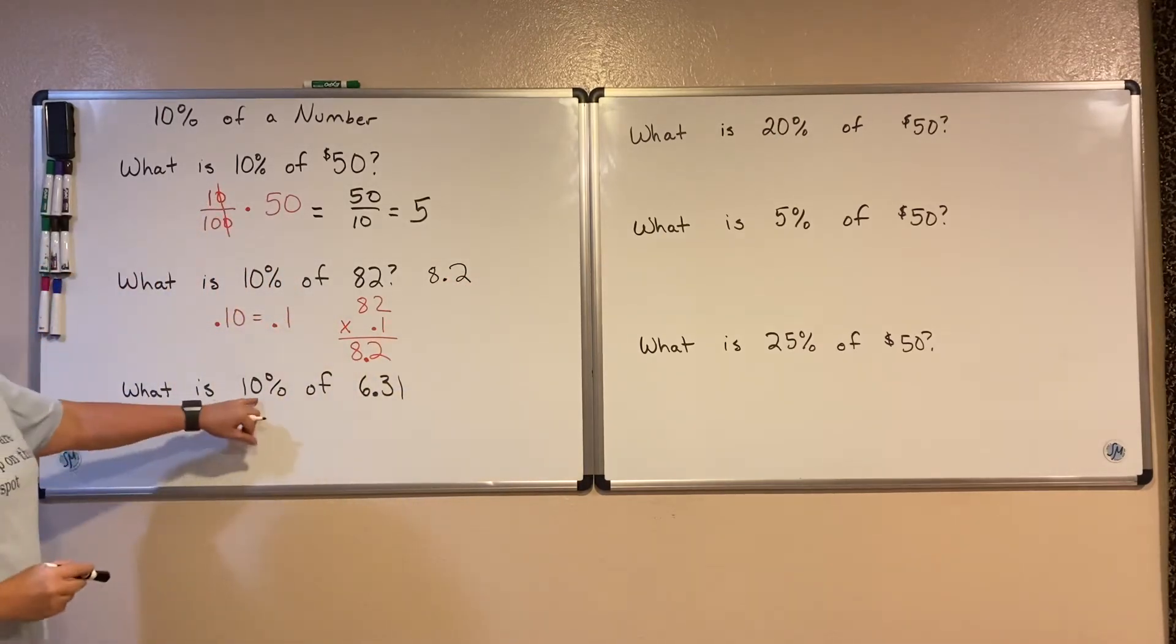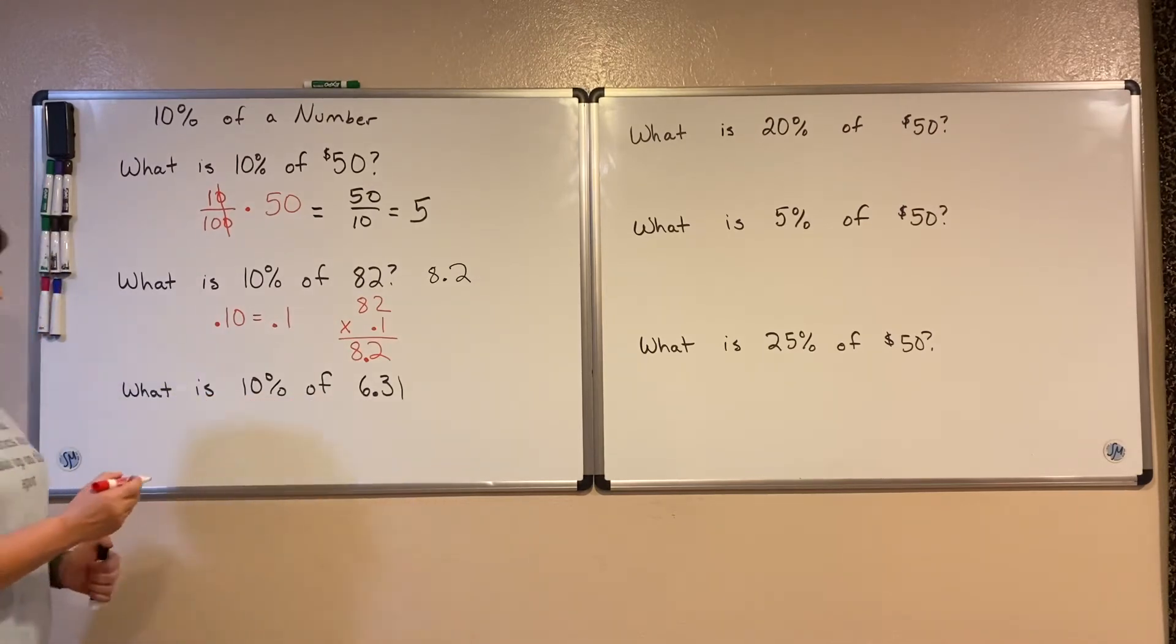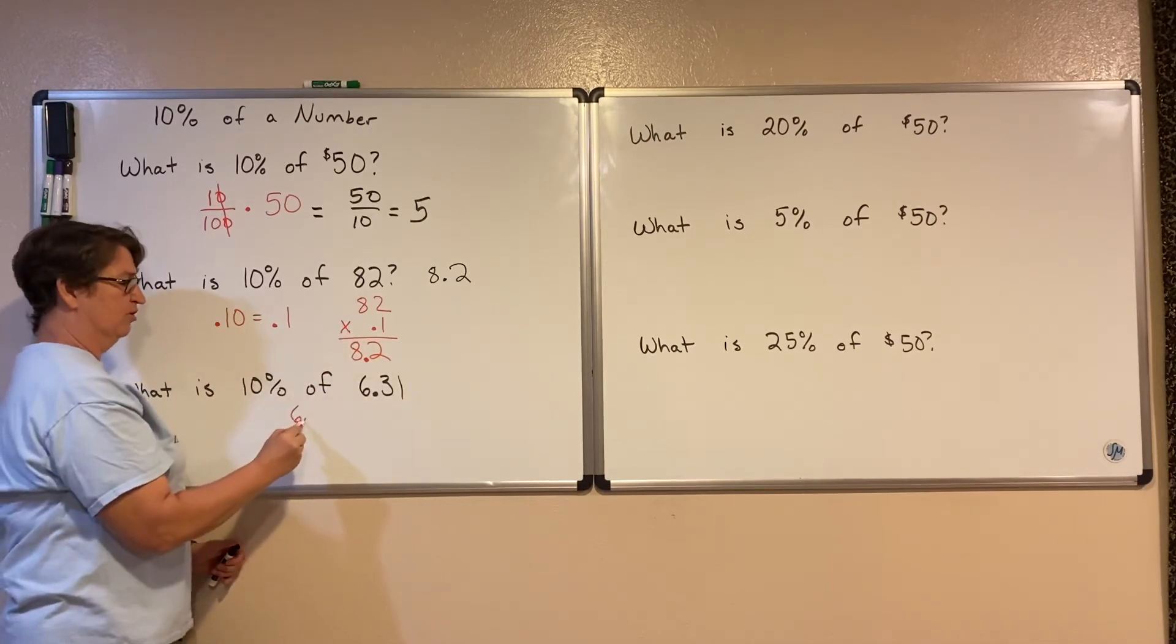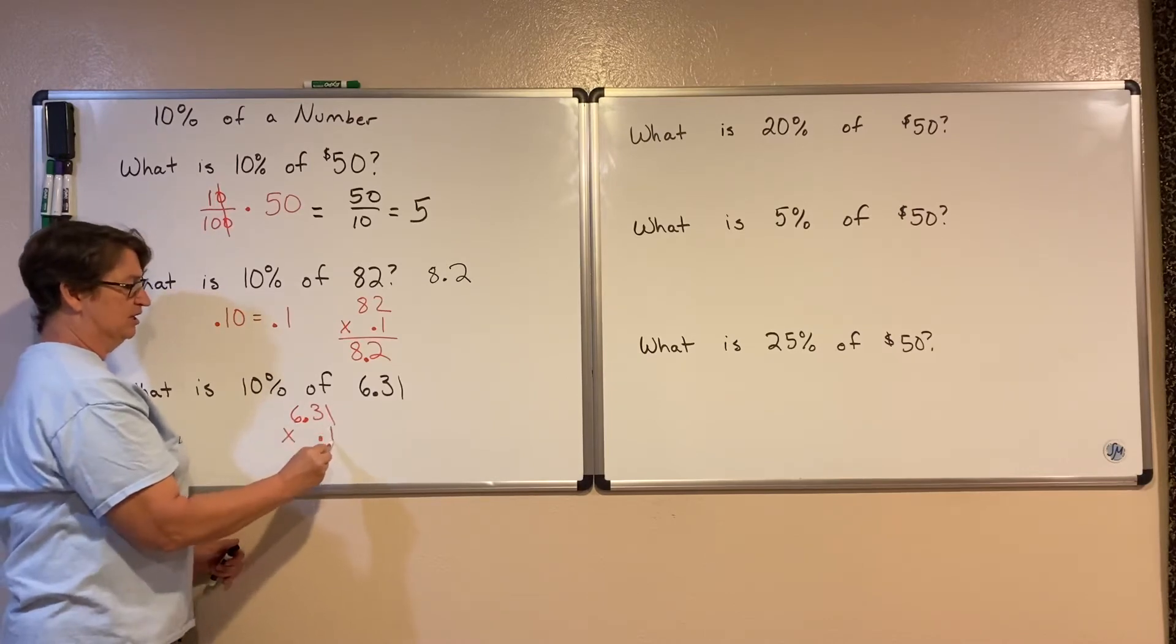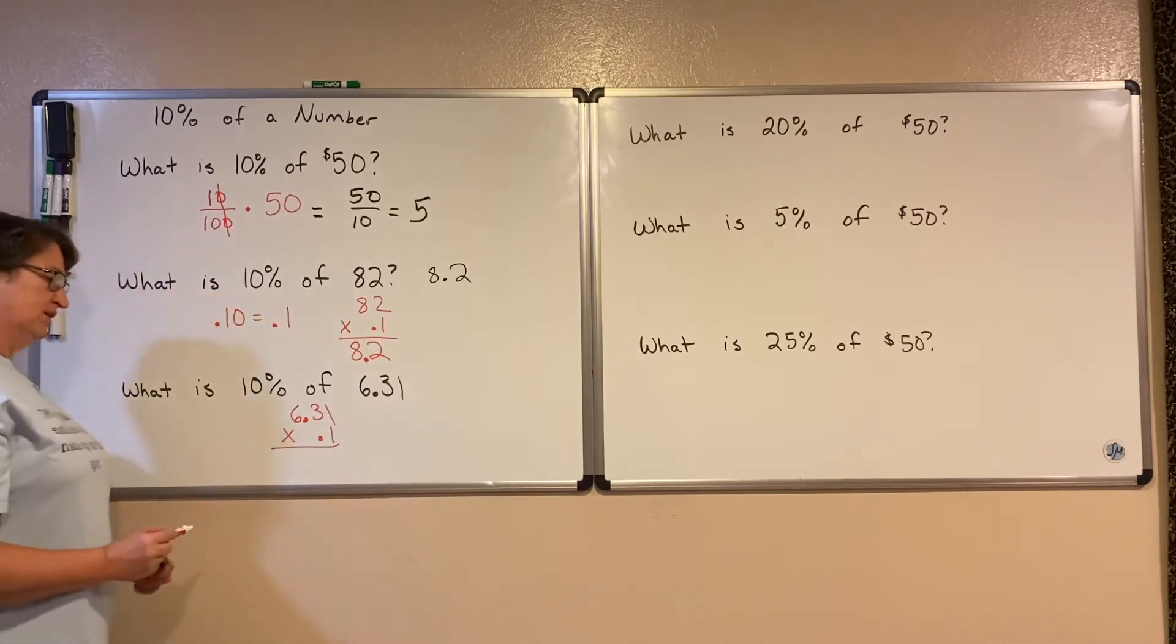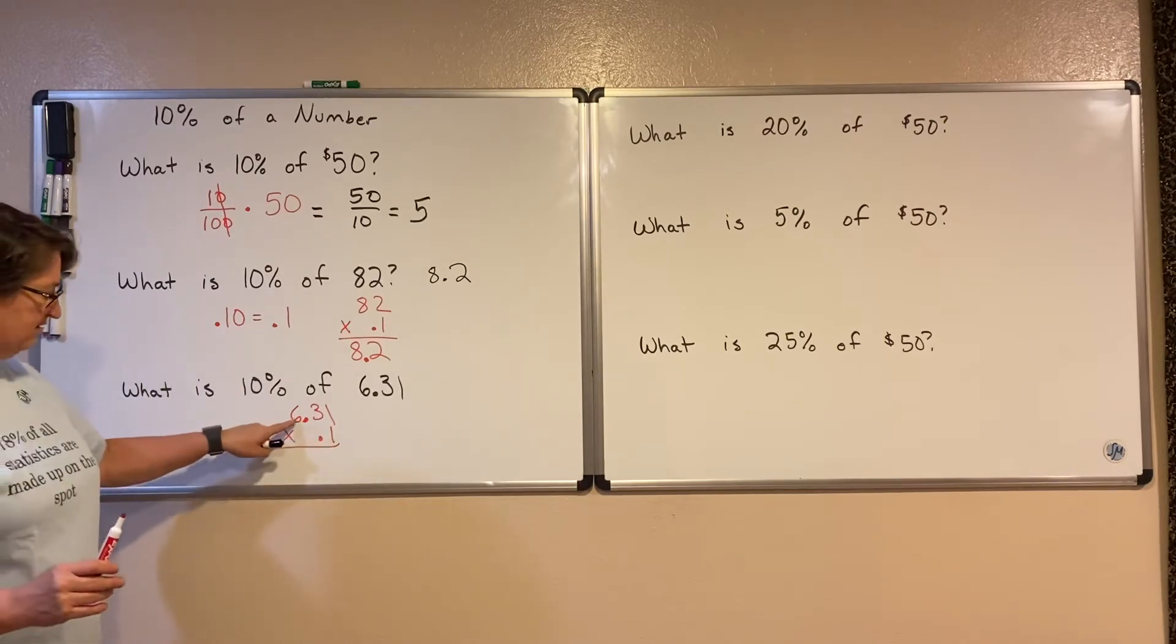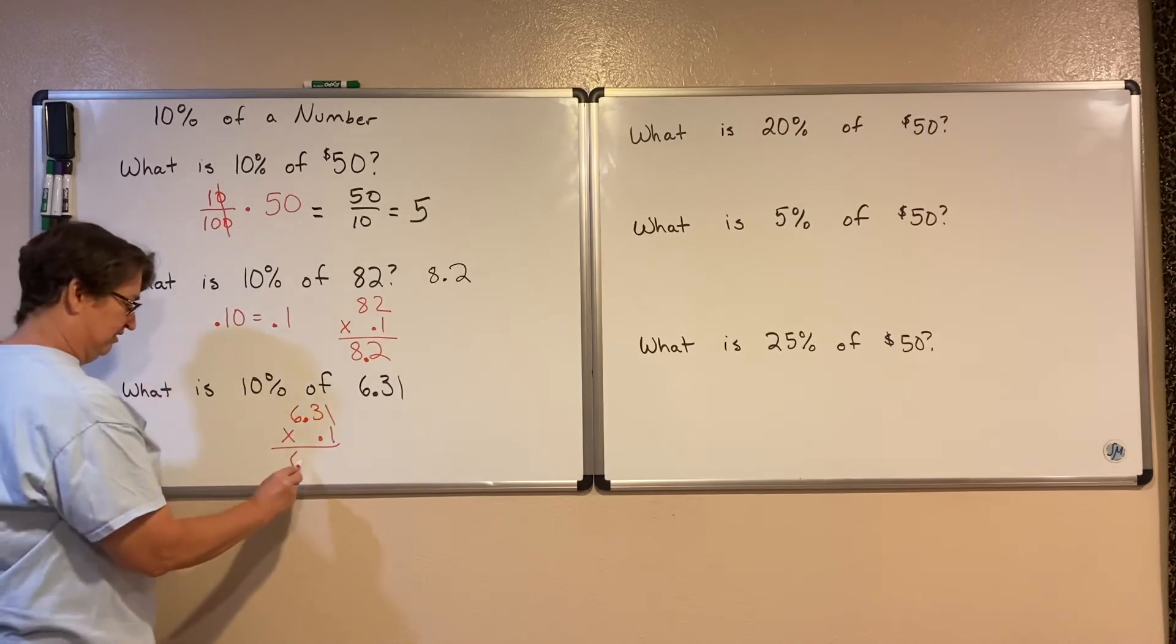Let's now take 10% of 6 and 31 hundredths, and I'm going to do the same thing, where I just multiply by its decimal form. So 6 and 31 hundredths times that 1/10. Again, ignore the decimals to begin with. You're just multiplying 631 times 1, and you get 631.